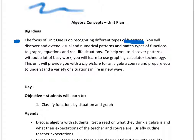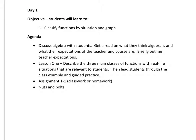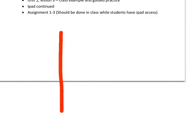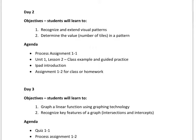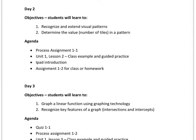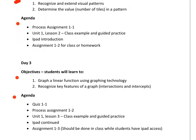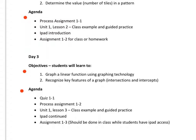Let's scroll here and you can see day one — we have objectives and agenda items. Our objective for day one is to classify functions by situation and graph, and then we have each of these agenda items. None of these days are set in stone; this is just a general guideline for us and for you to see where we are. Day two again has objectives and agenda, and day three has objectives and agenda. You want to be looking for the day, the objectives, and the agenda — and this is flexible.